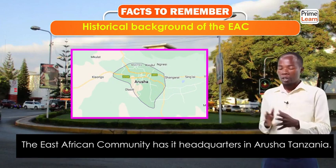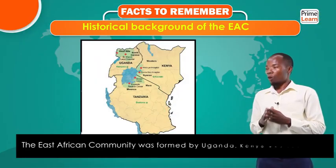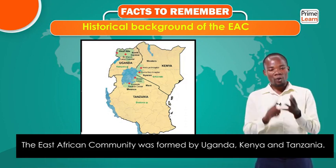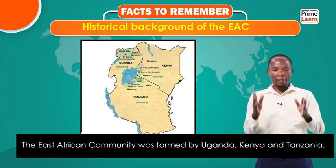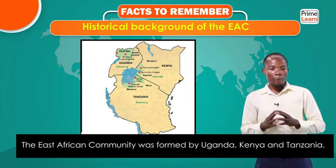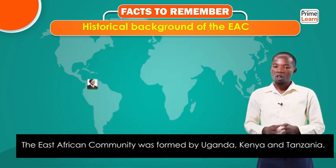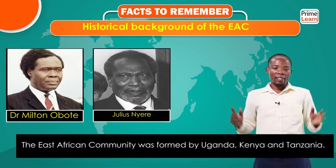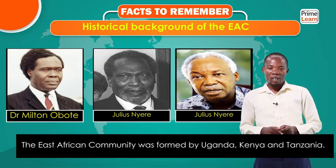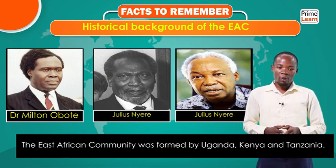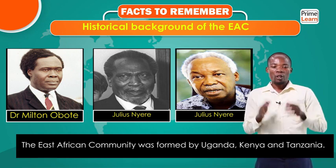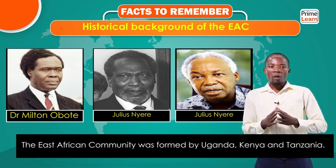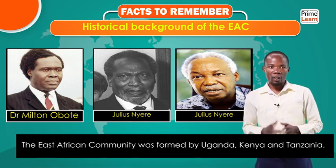The East African Community was formed by three founding countries: Uganda, Kenya, and Tanzania, under the leadership of three former presidents — Dr. Apollo Milton Obote of Uganda, Mzee Jomo Kenyatta of Kenya, and Julius Kambarage Nyerere of Tanzania. Those three former presidents helped in the formation of the East African Community.